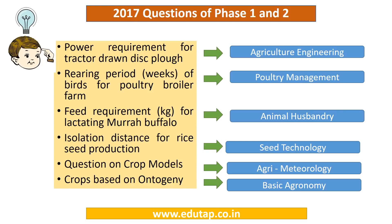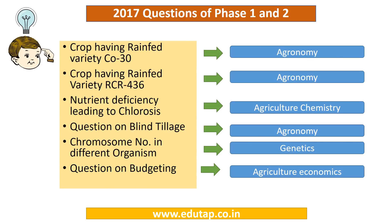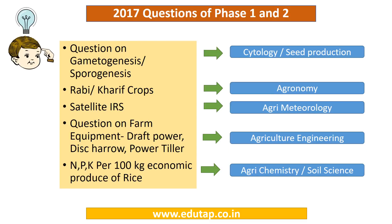Now let us look at the questions asked in the 2017 examination. The questions were related to core agriculture concepts — for example, crop models, crops based on ontogeny, isolation distance for rice seed production. Other questions included: which nutrient deficiency causes fern leaf in potato; what is a salt-tolerant crop; questions on integrated farming systems; crop having a rain-fed variety; nutrient deficiency leading to chlorosis; blind tillage; chromosome number in different organisms; and a question on budgeting.